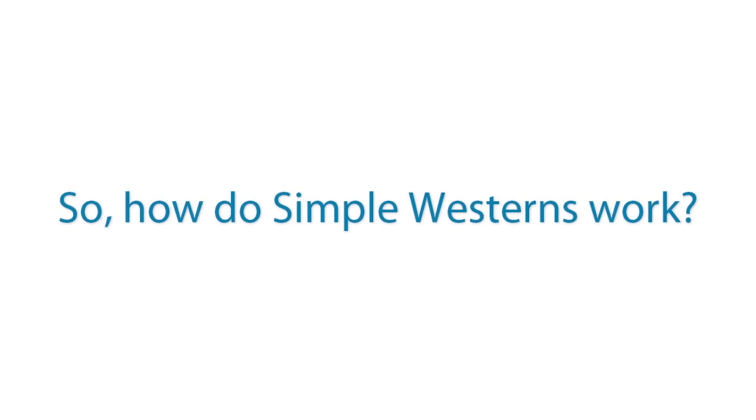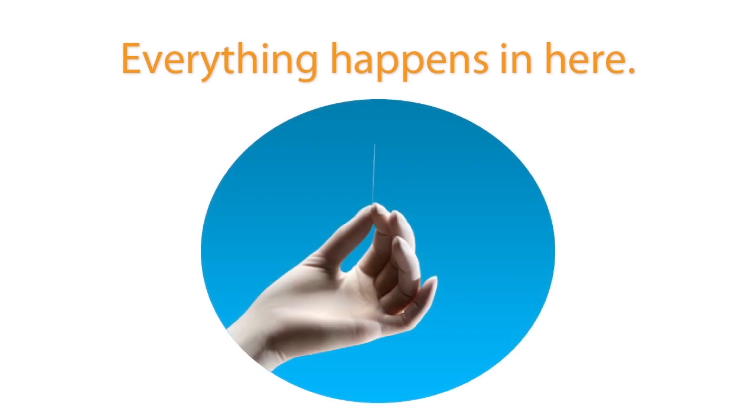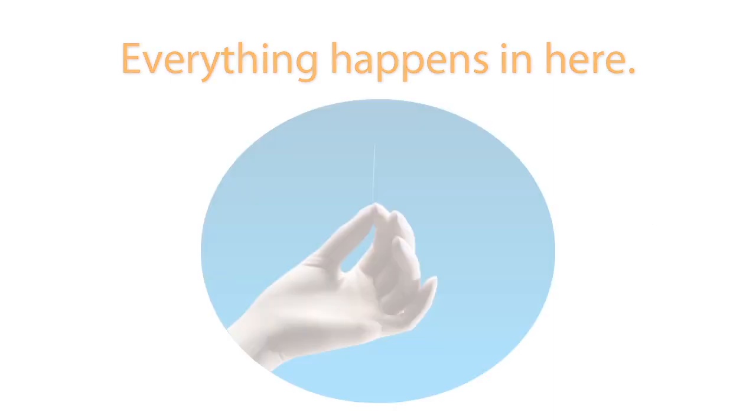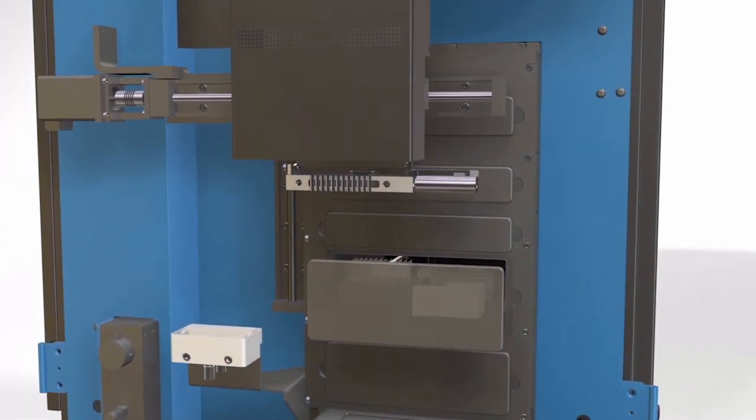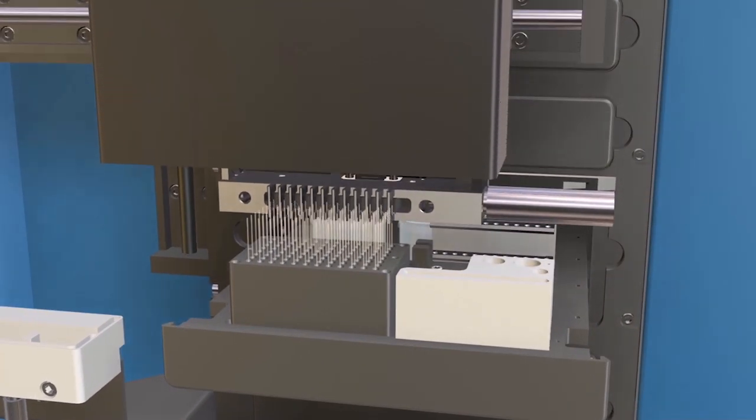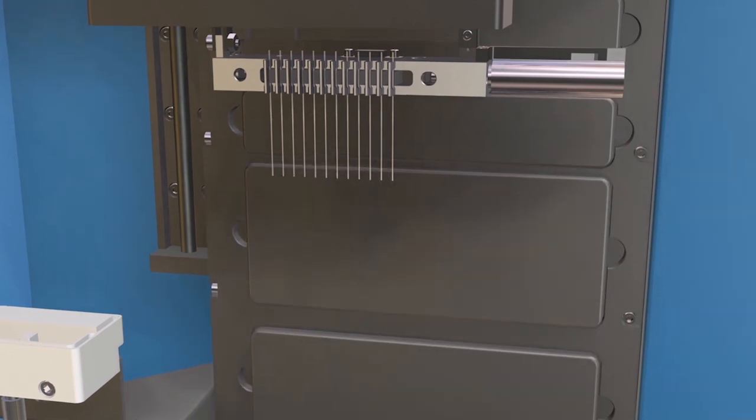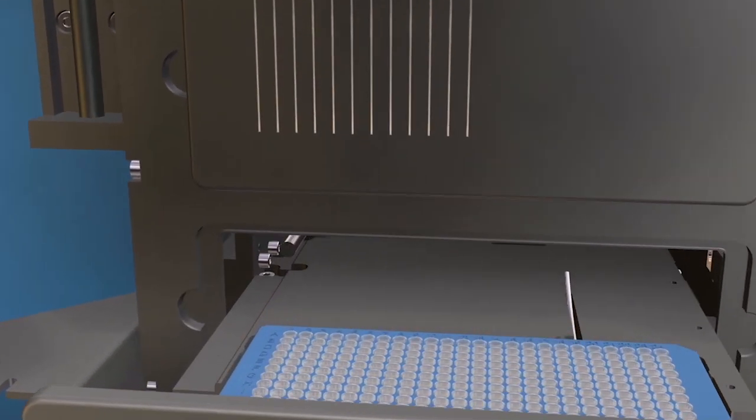You're probably wondering exactly how Sally Sue does Simple Westerns. Well, everything happens inside of a capillary. Sally Sue picks up 12 capillaries at a time for each cycle. She does up to 8 cycles for a total of 96 Simple Westerns. Sally Sue will load samples,